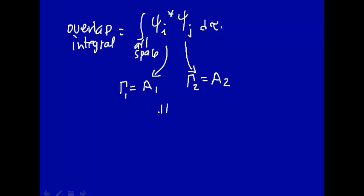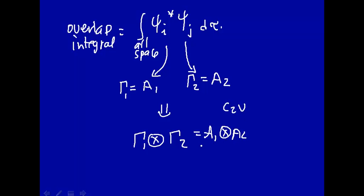What you can do — the way to do this — is to look at the symmetry of one times the symmetry of the other. So that would be A1 multiplied by A2 for C2v symmetry. We know that the irreducible representations — those rows in the character table — are orthonormal. So if you multiply one irreducible representation by another, say A1 and A2, this is guaranteed to be zero because of the orthonormality of A1 and A2.